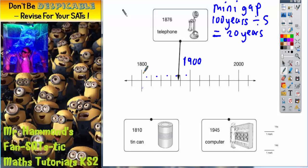So this line here is 1800, so this would be 1820, 1840, 1860, 1880, 1900, 1920, 1940, 1960, 1980, the year 2000.